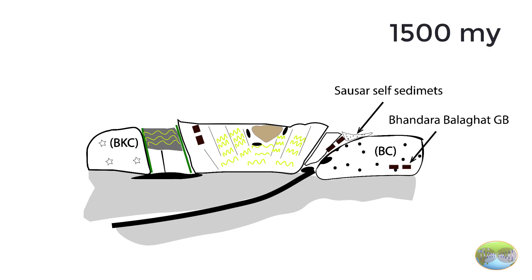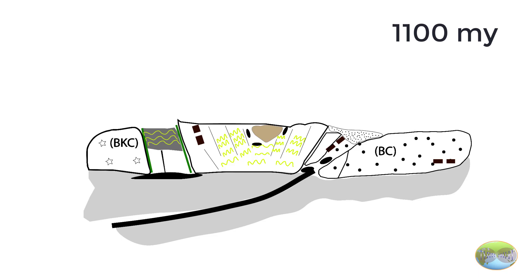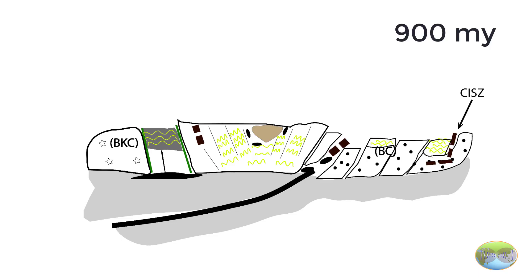The amalgamated cratons formed basement for Saucer group of shelf sediments about 1100 million years ago due to continued crustal thrusting. Saucer belt was formed. After this, Central India shear zone formed along with the exhumation of Mandara-Balagat granulite belt.